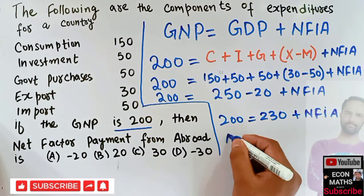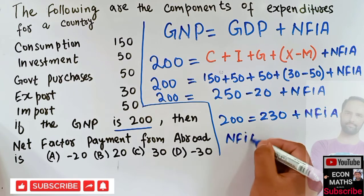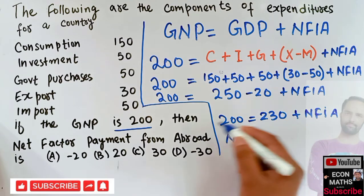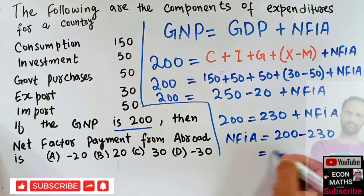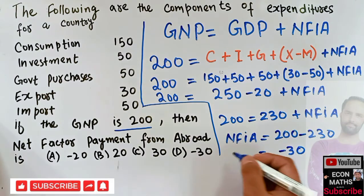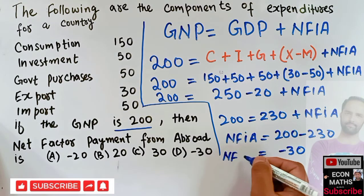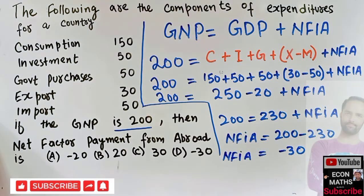Now NFIA will be equal to—transposing this, it will get subtracted from this 200—so we have 230. That means 200 minus 230 comes out to be minus 30. That means our net factor payment from abroad is equal to minus 30. I hope I make myself clear, thank you.